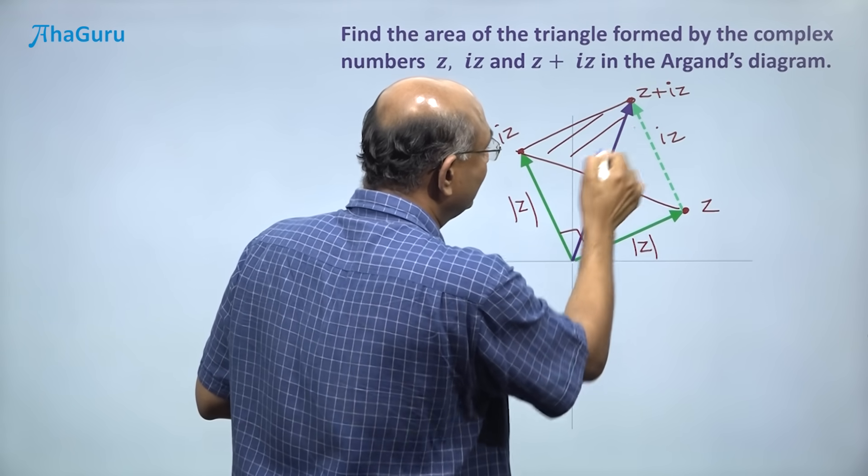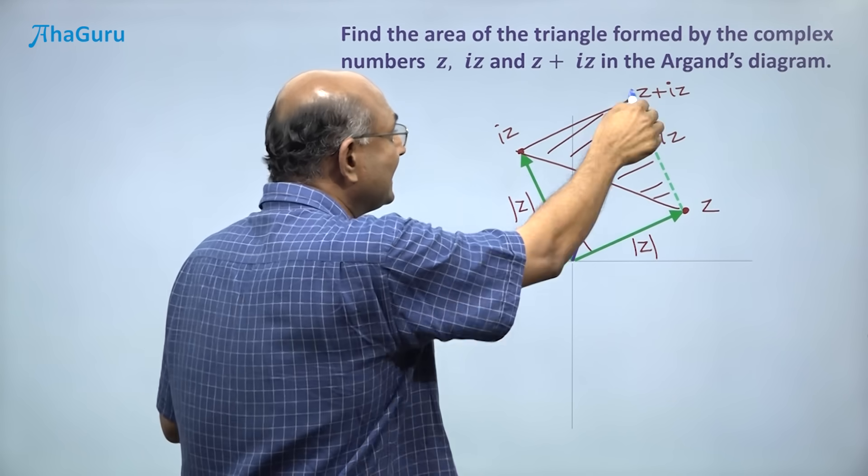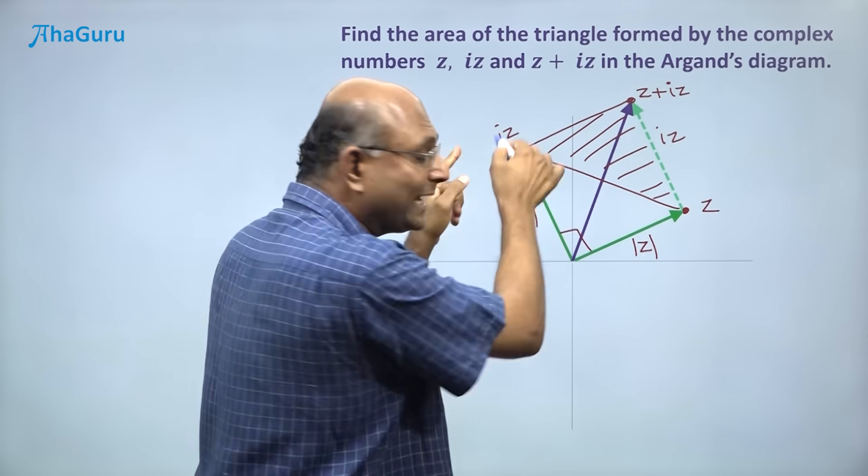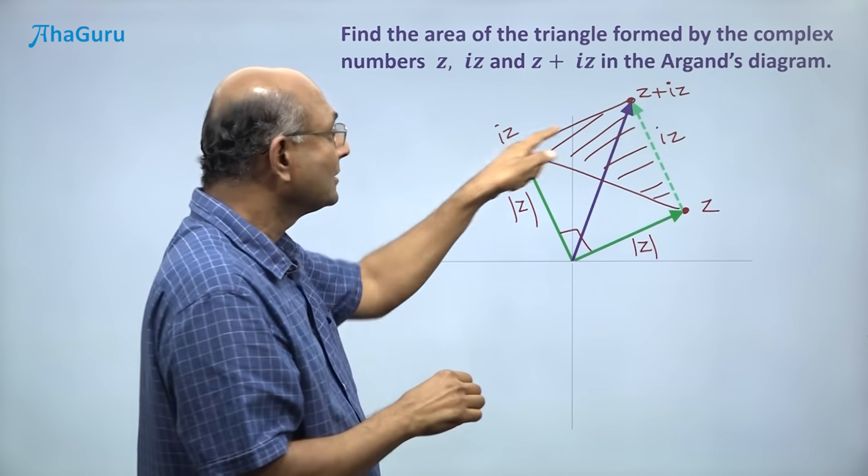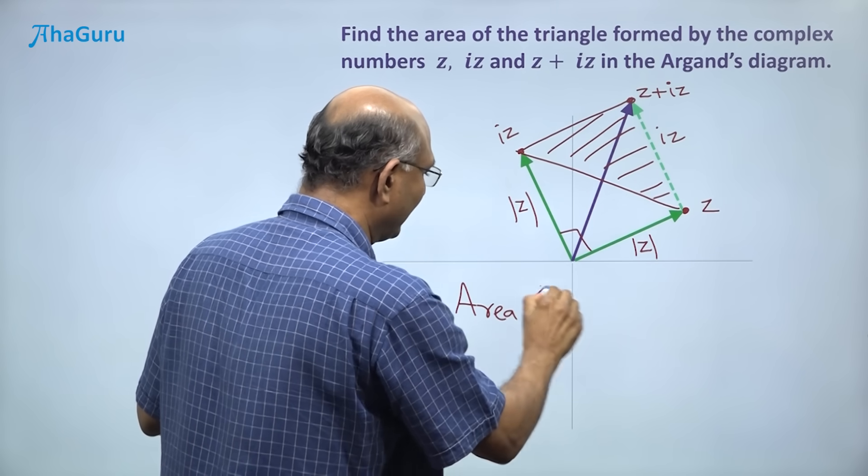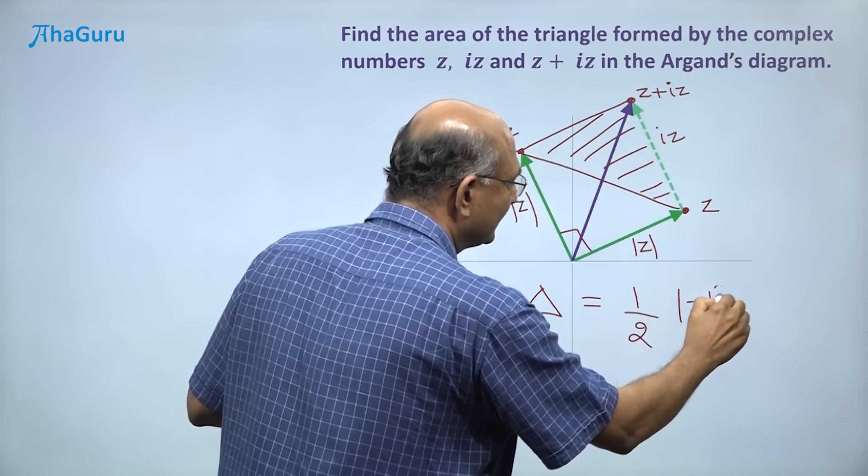Well what do we want then? We want to find this triangle. But that triangle's area is exactly half of this square's area. But what is the square's area? Modulus z square. So the area of the triangle is half of modulus z square.